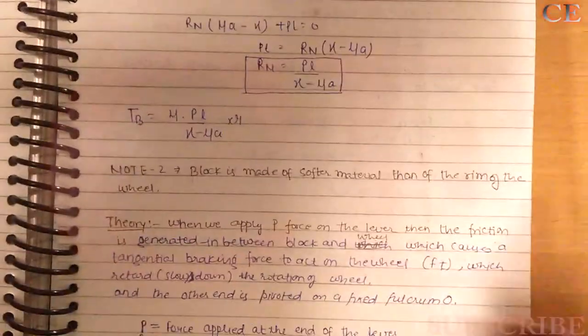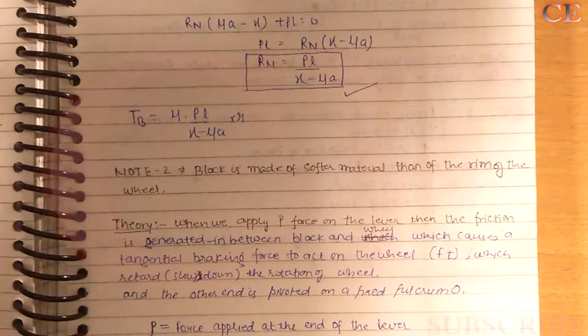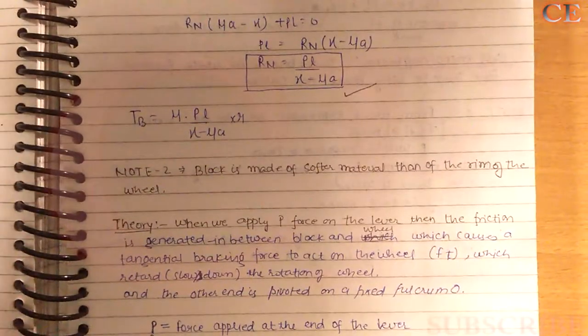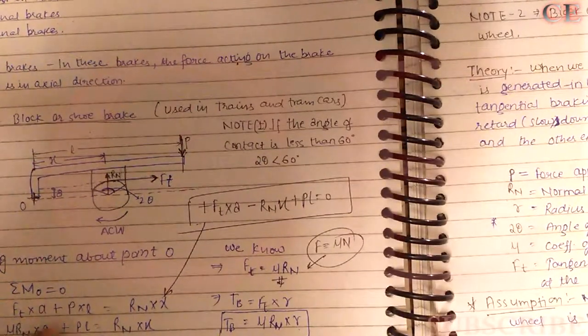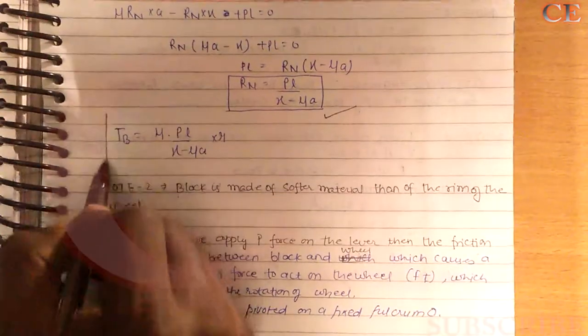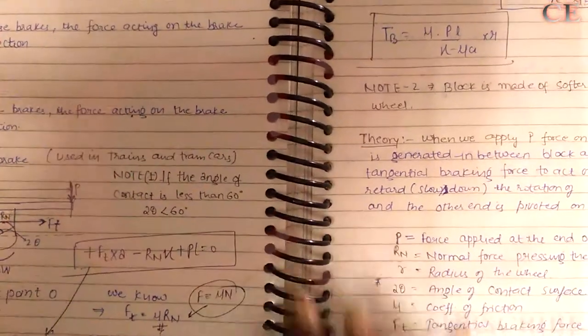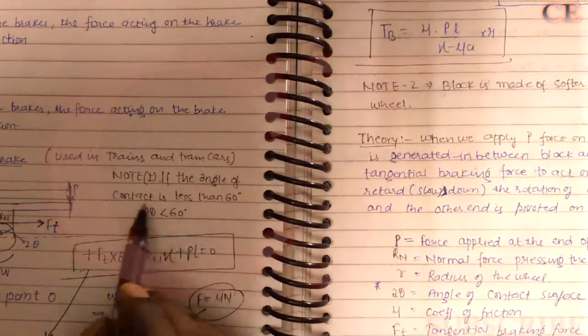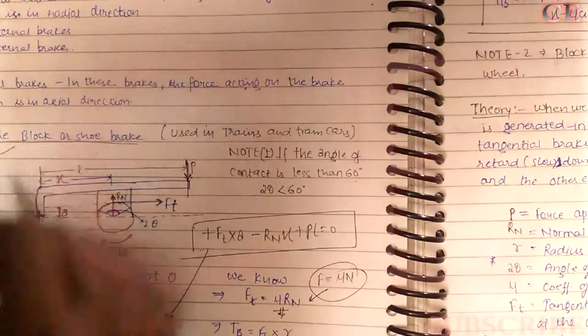After solving the moment equation, we can find the value of Rn. By substituting the value of Ft and simplifying, we get the expression for Tb — the braking torque. One important condition to note: if the angle of contact is less than 60 degrees, only then can this braking system be applied.